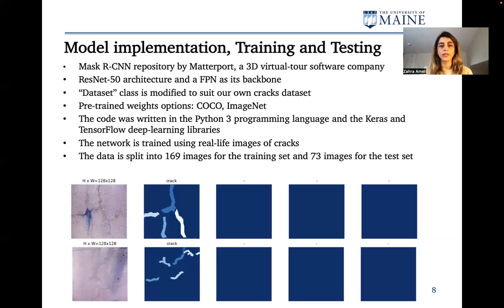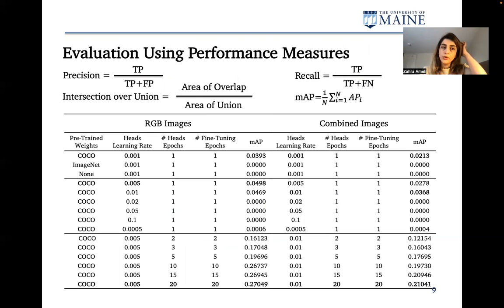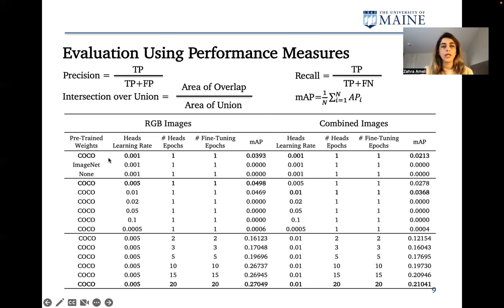The dataset is split into 169 images for the training set and 73 images for the test set. We used precision, recall, and mAP as performance measuring metrics. First, we tried COCO, ImageNet, and no pre-trained weights, letting the algorithm find the best weights for each image set — RGB and combined — and found that COCO pre-trained weights worked better. We then continued with COCO and fine-tuned our algorithm to decide how many epochs and what learning rate works best for our purpose.